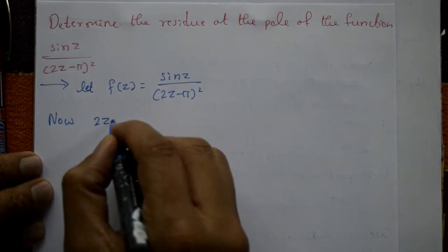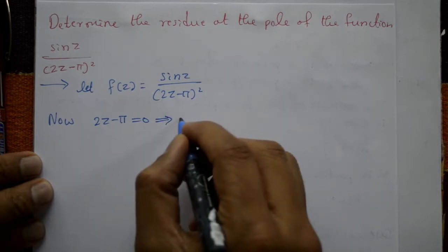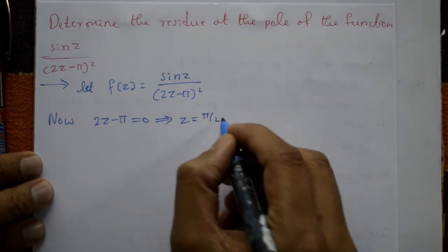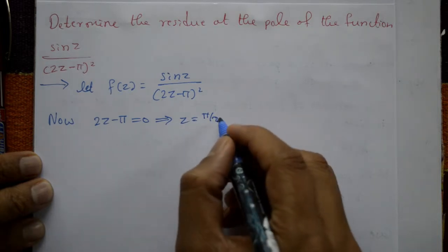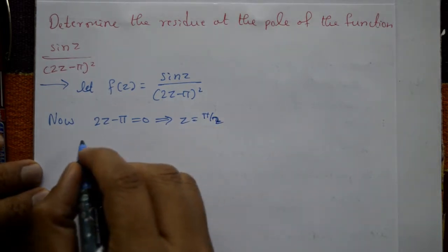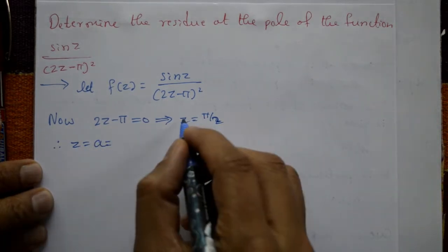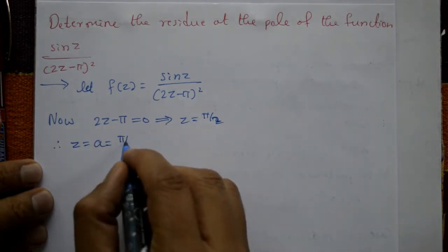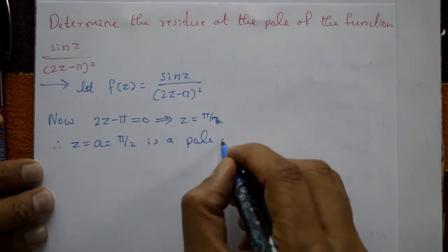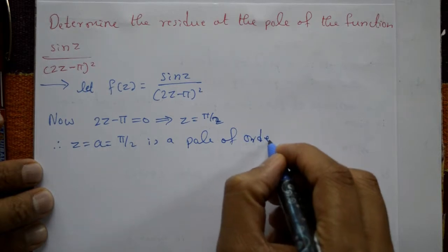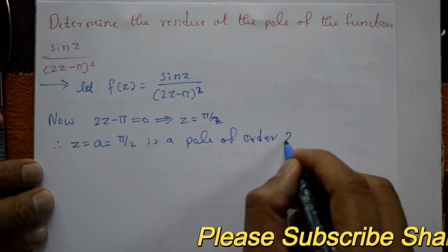Setting 2z minus π equal to 0 gives z equal to π/2. Therefore z = a = π/2, and this is a pole of order 2.